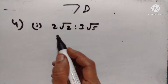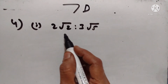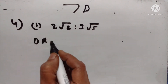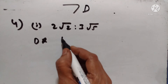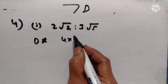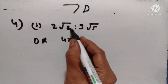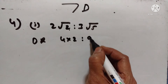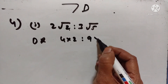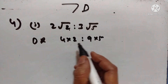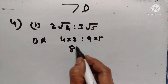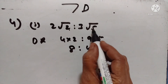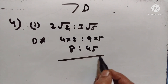Fourth — first problem: we have to find the duplicate ratio. Duplicate ratio is the square. So for 4√2 is to 3√5: √2 into √2 equals 2, so 4 squared times 2 equals 8; 3 squared times 5 equals 45. The duplicate ratio is 8 is to 45.